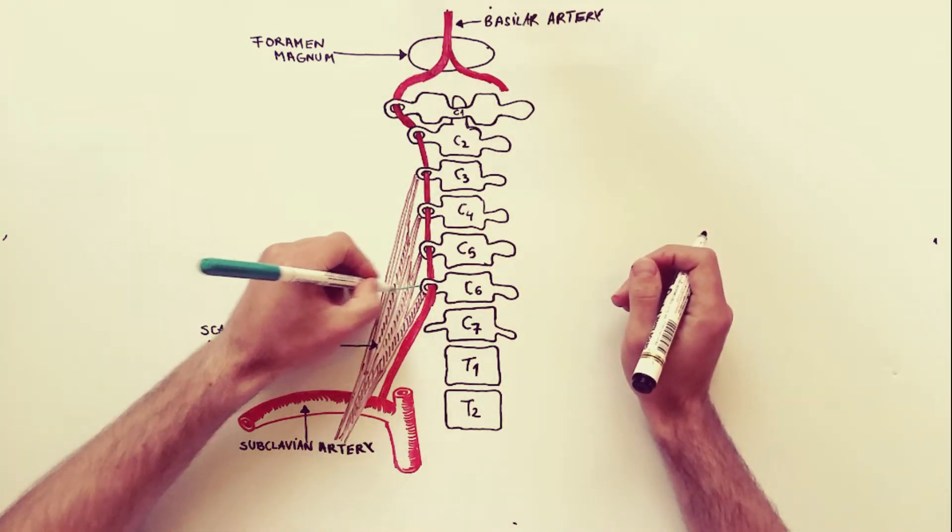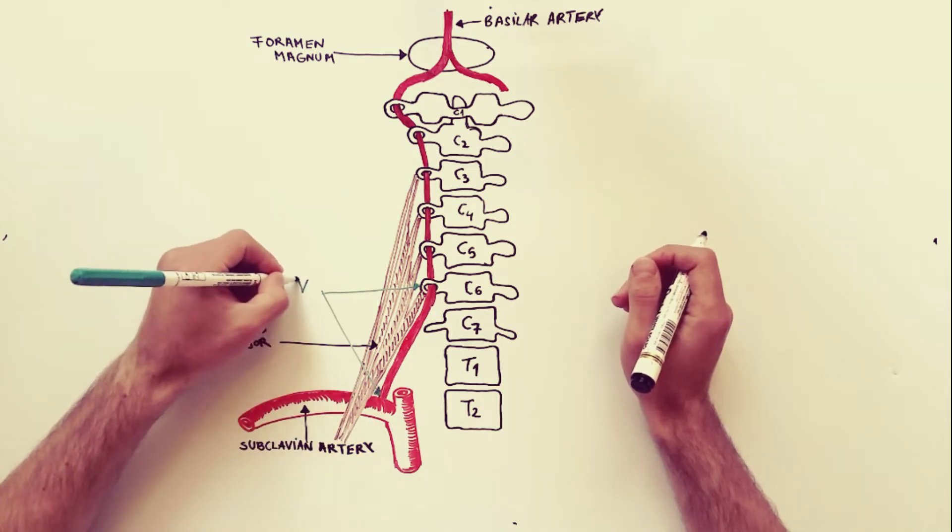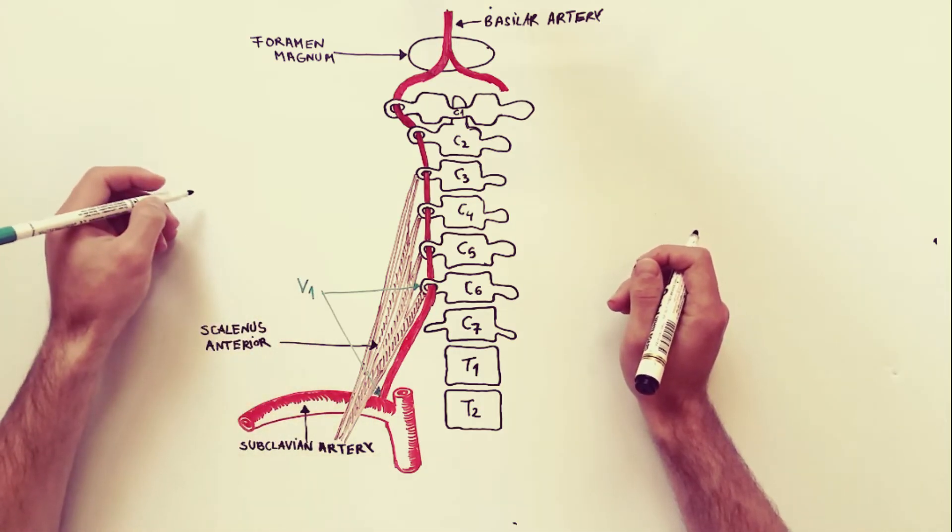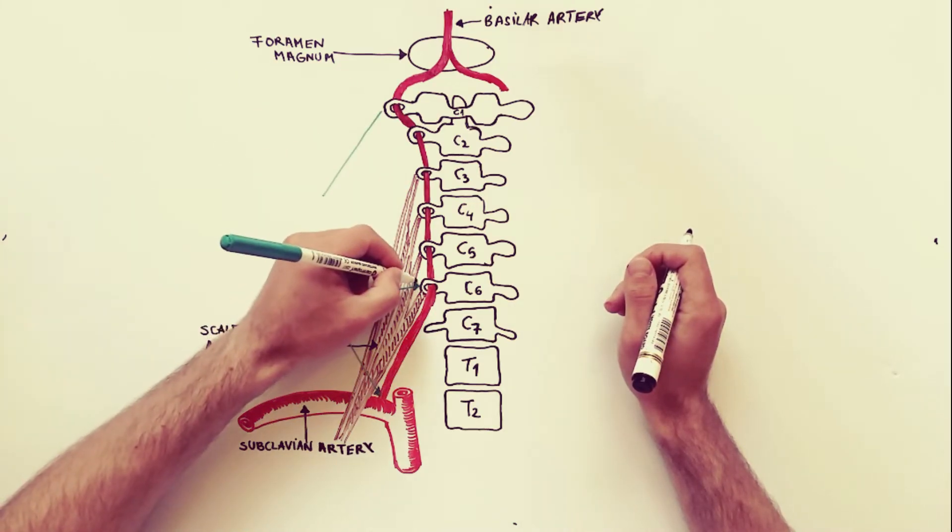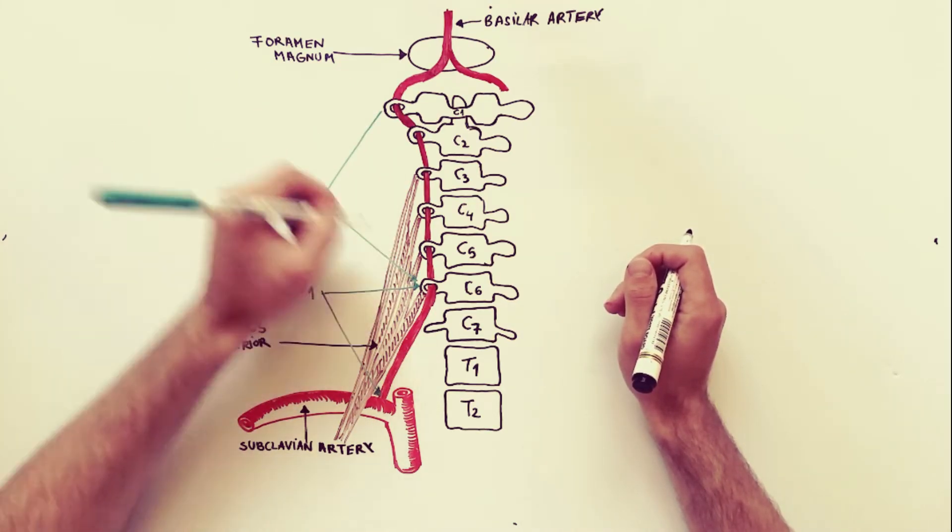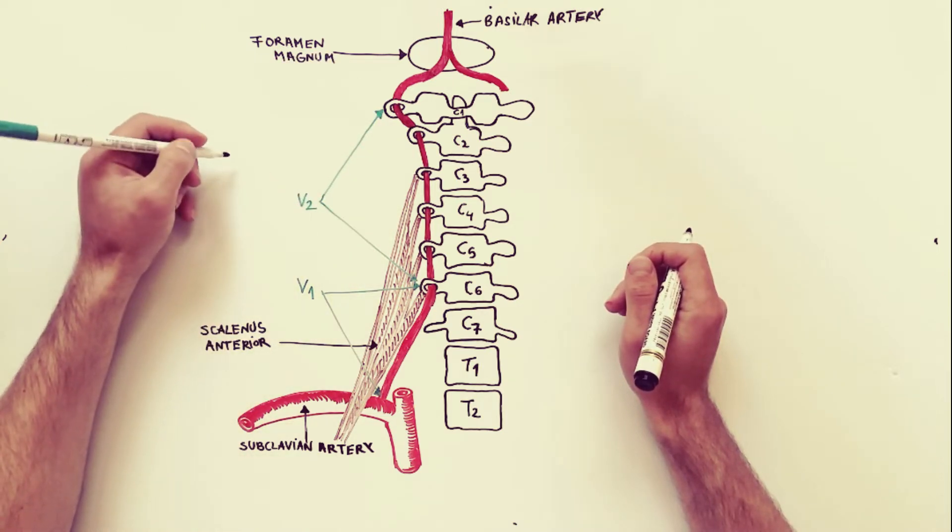The vertebral artery is divided into four parts. The first part, or the V1, extends from the origin to foramen transversarium of C6 vertebrae. The second part, or the V2, lies within the foramen transversaria of the upper six cervical vertebrae.